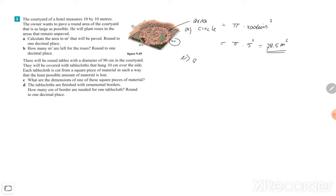The whole courtyard area is 10 by 10 meters, which is 100 square meters. So what is left if we just subtract those two answers, the 78.5 and 100 square meters. Area left is 100 minus 78.5, so that will be 21.5 square meters. That's left for the roses.